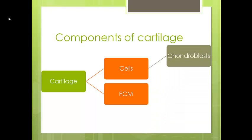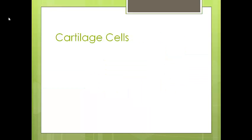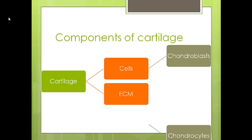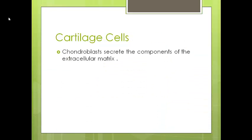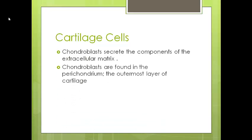The cells of the cartilage are called chondroblasts and chondrocytes. Chondroblasts are important because they secrete the components of the extracellular matrix. The extracellular matrix is very important to the function of cartilage — the fact that it is flexible and can bend without breaking. So all components of the extracellular matrix are secreted by the chondroblasts.